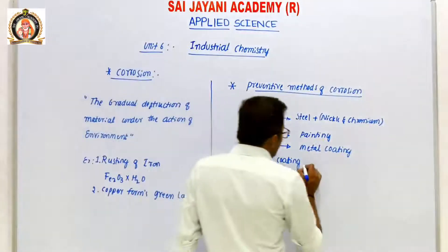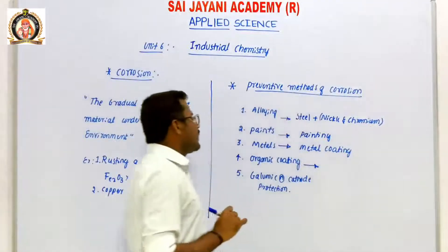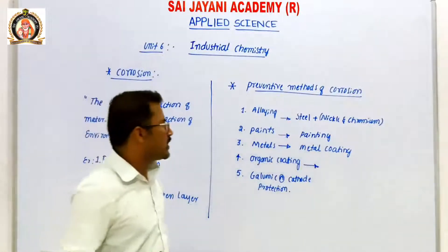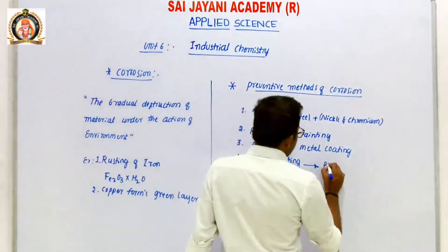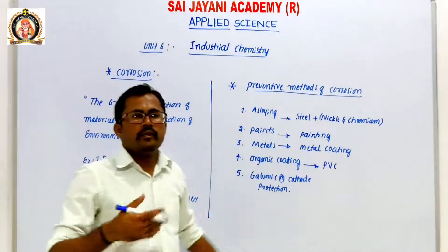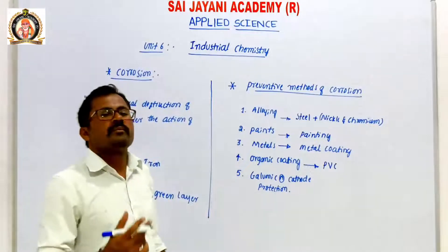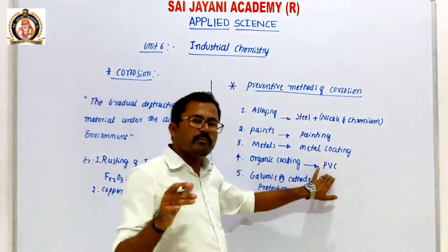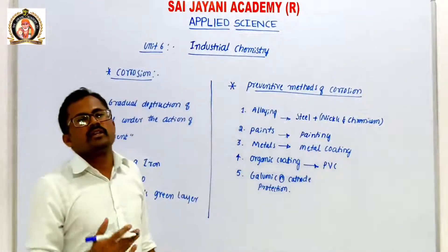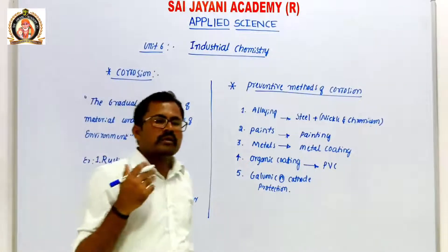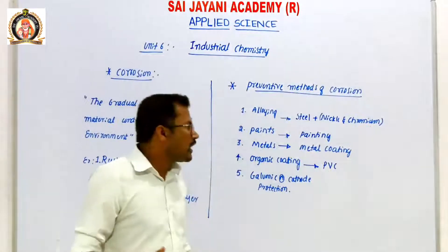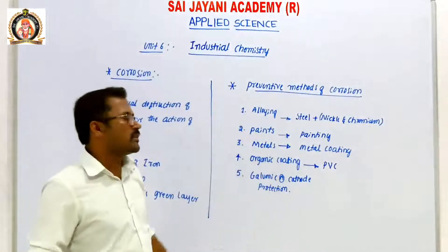Next: Organic Coating. In place of metal, we can use organic polymers — for example, PVC, polyester, polyethylene. These are used to coat steel rods and rubber. Organic polymers are resistant to corrosion and can save the material.